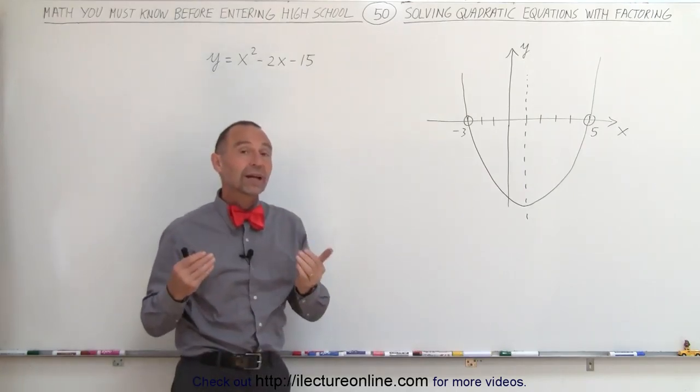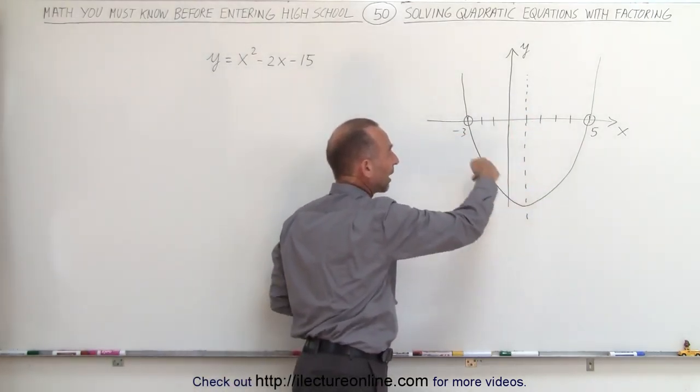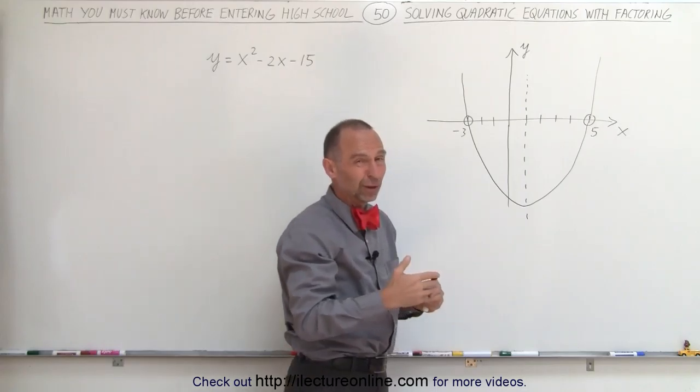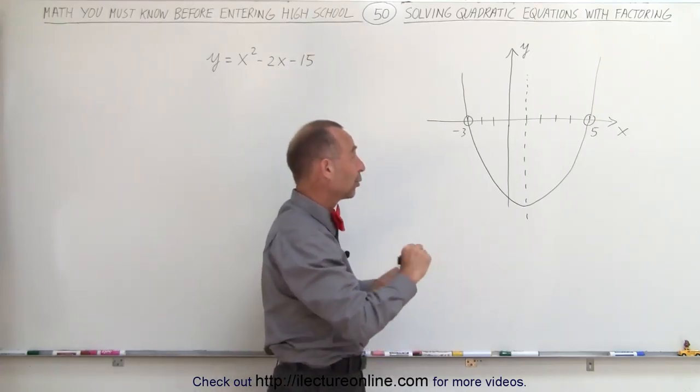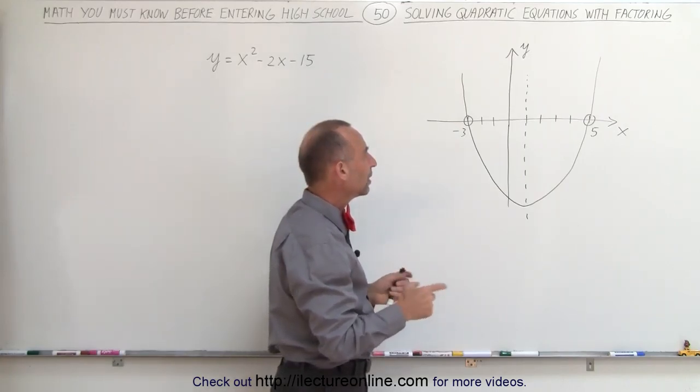Notice that with quadratic equations we have a parabola when we try to graph them, and quite often the parabola will cross the x-axis in one or more places, or one or two places, not more—sometimes not at all, and we'll get into that in a different video.